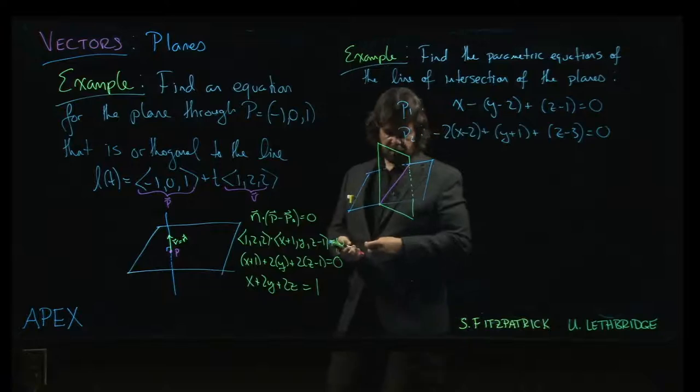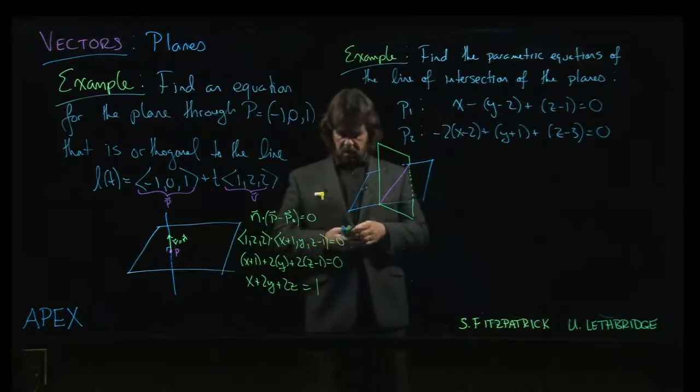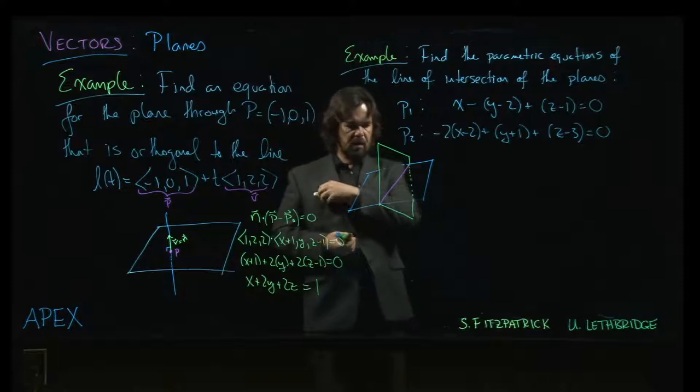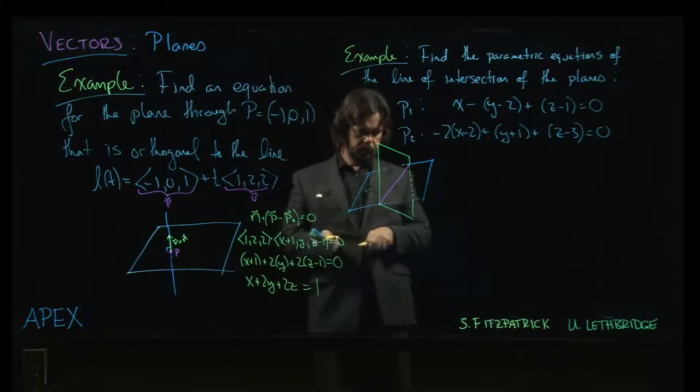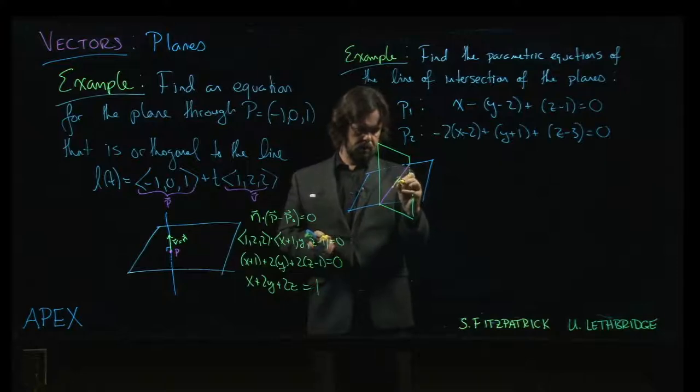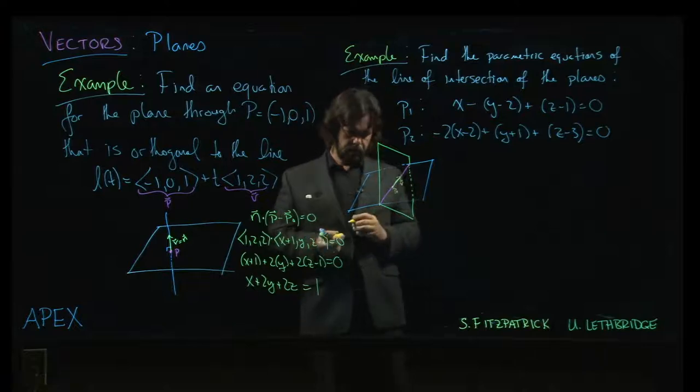So we've got these two intersecting planes. We want to get an equation for the line. So to get an equation of a line, we know what we need. We need a point on the line and we need a direction vector V. That's what we need.